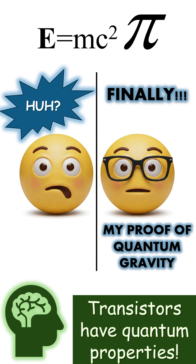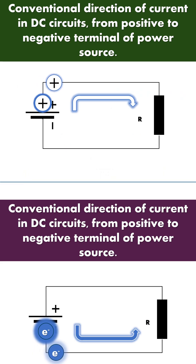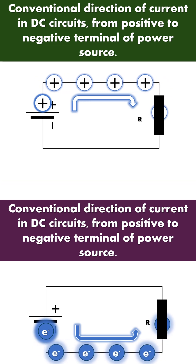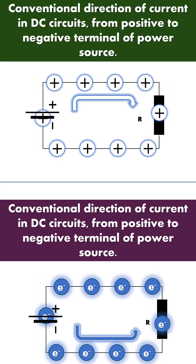Where does this nonsense that transistors are quantum devices come from? Well, the story goes something like this: contrary to the standard convention of current direction in DC circuits, where holes are carriers of electromagnetic field propagation, the propagators of this bovine sophistry base their claim for quantum properties on the fact that in real life, electrons are the true facilitators of electromagnetic field propagation through the conduits. So far, no objections — this is true. But there is an unwarranted leap into nonsense.